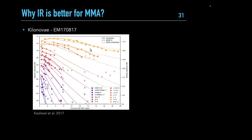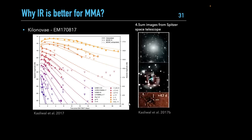The kilonova was also brighter in the infrared bands than in the optical. At very late times — around 43 to 45 days post-explosion — normally a supernova would still be detectable, but kilonova emission fades within a few days optically. However, the Spitzer Space Telescope at 4.5 microns was the only instrument that could detect this kilonova at 43 days, confirming that emission truly shifts and persists in the infrared.